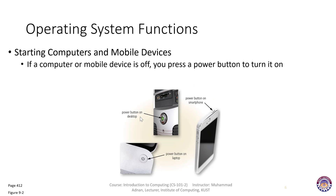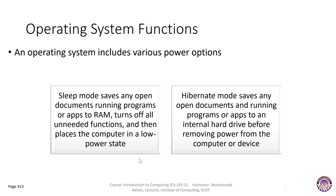When you click the power button on a desktop, laptop, or smartphone, the computer starts and different operating system instructions run automatically in the background, enabling other instructions to be transferred to RAM for further processing. An operating system includes various power options. Sleep mode saves any open documents and running programs or apps to RAM, turns off all unneeded functions, and places the computer in a low power state — allowing important programs to keep running.